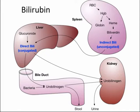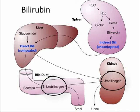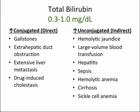Before discussing alterations in bilirubin, let's review where bilirubin comes from. Hemoglobin from a red blood cell is broken down into globin and heme. Heme is broken down further into bilirubin, which is converted into indirect bilirubin or unconjugated bilirubin. This then moves to the liver, where it's converted into direct bilirubin or conjugated bilirubin. Bilirubin then enters the bile duct and is converted into urobilinogen, which is released in stool and urine. An increase in conjugated bilirubin can be found in gallstones, extrahepatic duct obstruction, extensive liver metastasis, and drug-induced cholestasis. An increase in unconjugated bilirubin can be found in hemolytic jaundice, large-volume blood transfusion, hepatitis, sepsis, hemolytic anemia, cirrhosis, and sickle cell anemia.